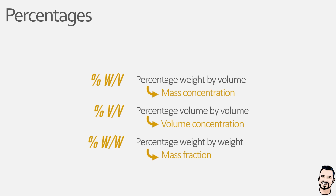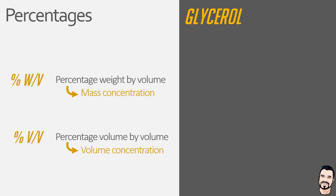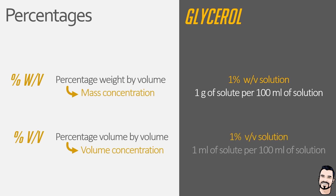But what do I mean by all of this? Well, let's take a look at an example, and for this we will use glycerol. Now a one percent weight per volume solution will contain one gram of glycerol in a final volume of 100 millilitres, and a one percent volume per volume solution will contain one millilitre of glycerol in a final volume of 100 millilitres. However, due to the density of glycerol being 1.26 grams per millilitre, our percentage weight per volume and percentage volume per volume identifiers are not interchangeable, and this should be easy to see in our one percent volume per volume solution.